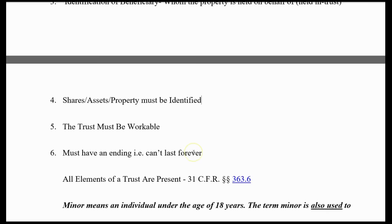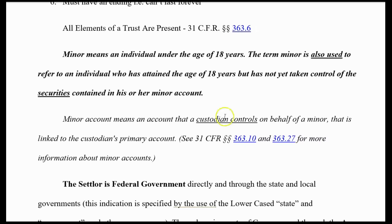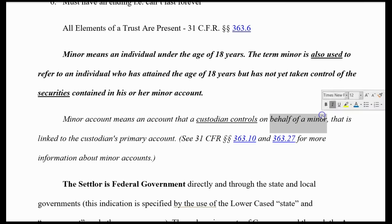There must be shares — of course there are different kinds and different forms of those shares. A birth certificate is one. The trust must be workable — they can work it and manage it. It must have an ending date — it can't last forever; of course when you die, it ends. So the elements of the trust: minor means under 18, but minor also refers to one who has not yet taken control of securities. A minor account means an account a custodian controls on behalf of a minor, linked to the custodian's primary account. They can't abuse the trust — they have to administer it upon your request.